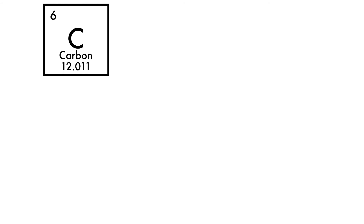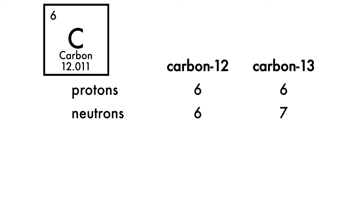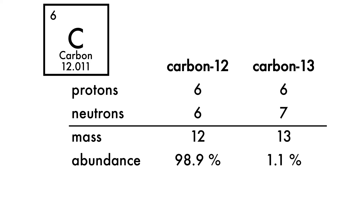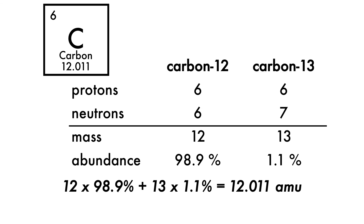Let's take a closer look at how we obtain the mass number for carbon. As we mentioned, we have two primary carbon isotopes: carbon-12 and carbon-13. Both have six protons but different numbers of neutrons — six in the case of carbon-12, and seven neutrons in carbon-13. This gives the mass numbers for these two isotopes. We can then use the normal abundances of these two isotopes — the percentage of them available in nature — to calculate the atomic mass of carbon as 12.011 atomic mass units.